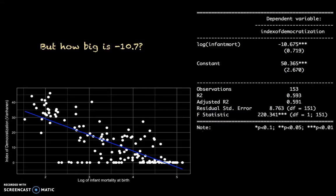It is hard to interpret, especially when you use a log scale, because it is hard to know what the unit of measurement is — what is two and three on this variable? Here, standardization can help. We will standardize both variables, the democratization variable and the mortality variable, and then rerun the regression to see how we can interpret it.